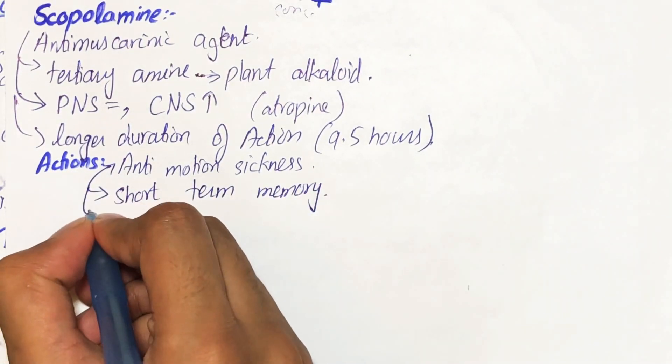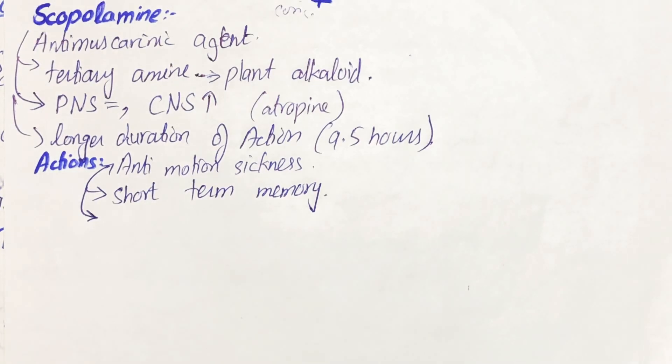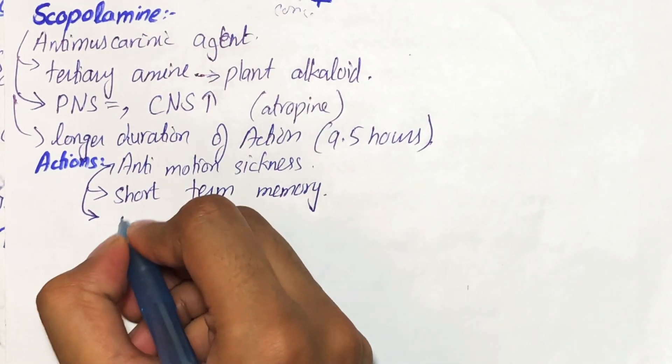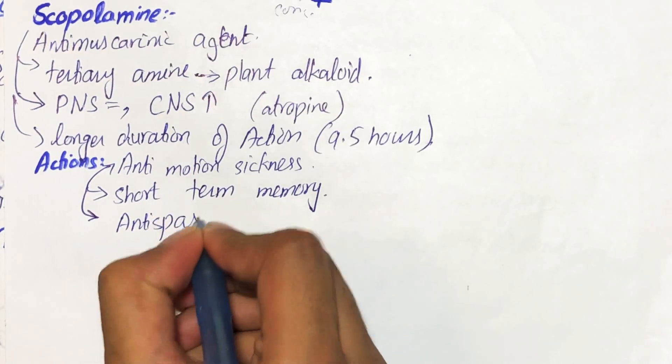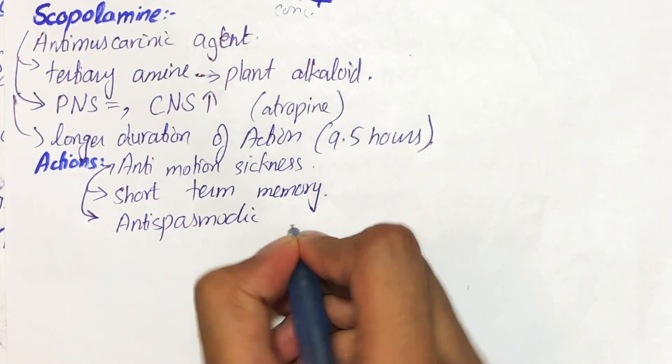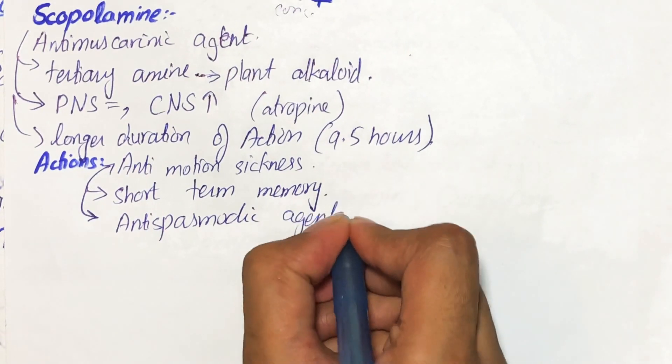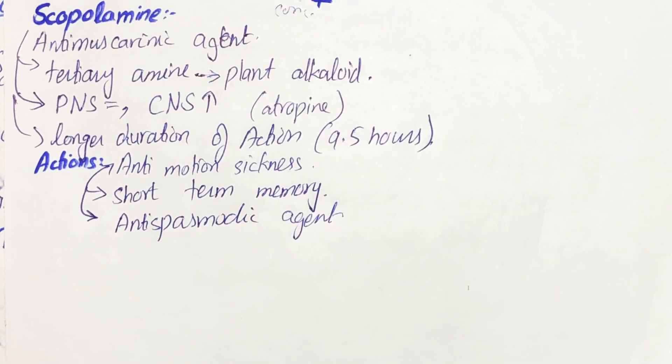As we have talked about atropine in the atropine video, that atropine is one of the most potent kinds of anti-spasmodic agent. Similarly, scopolamine is also one of the most potent kinds of anti-spasmodic agents.